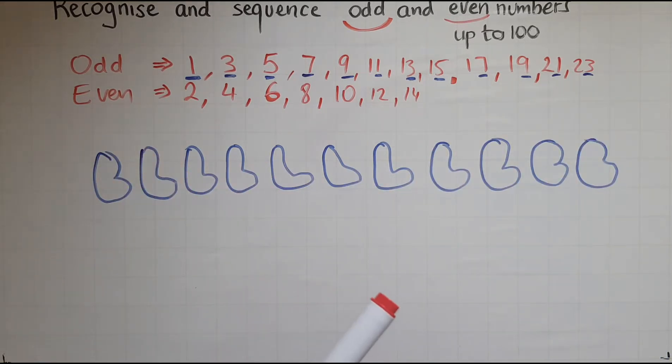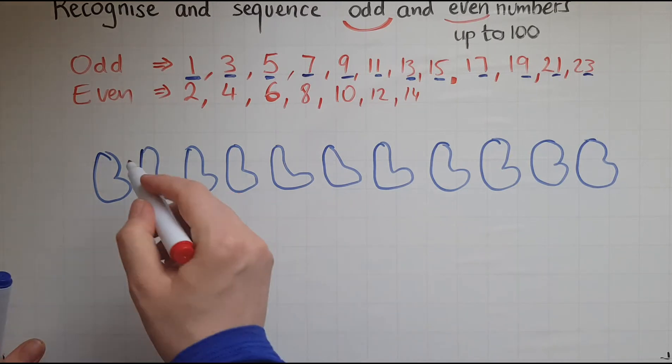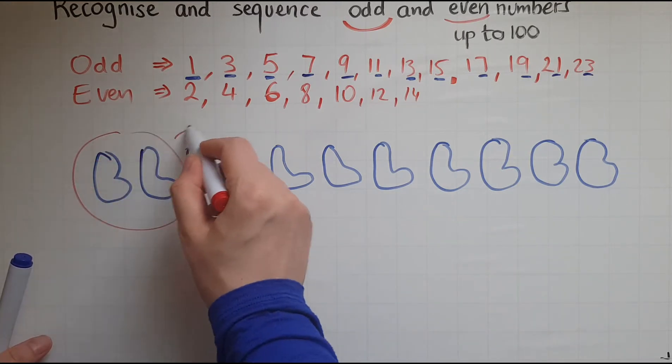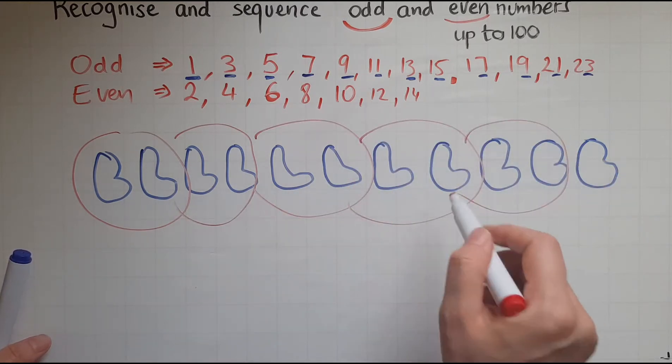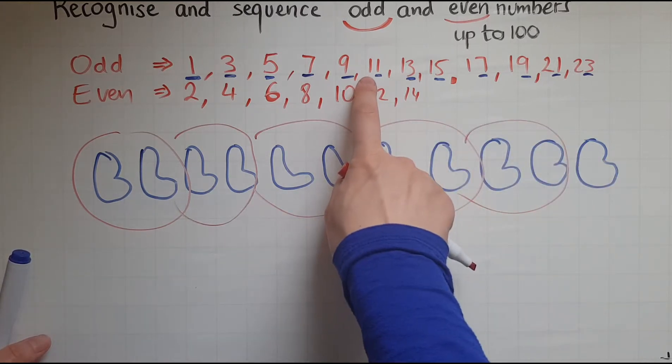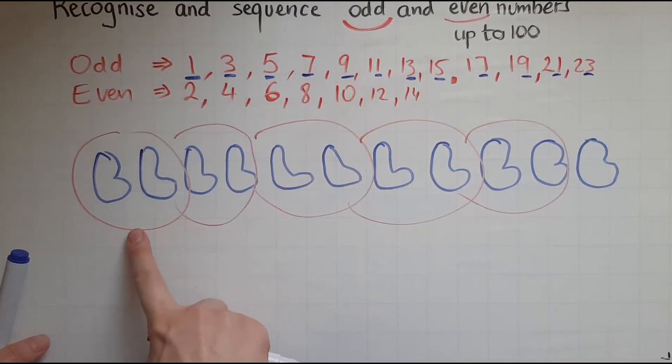So there are 11 socks. So what's going to happen? I'm going to make a pair there, 2, 3 pairs, 4 pairs, 5 pairs. So with the 10 in there, we're making pairs. So we've got them even. It's only the extra one that makes it odd.